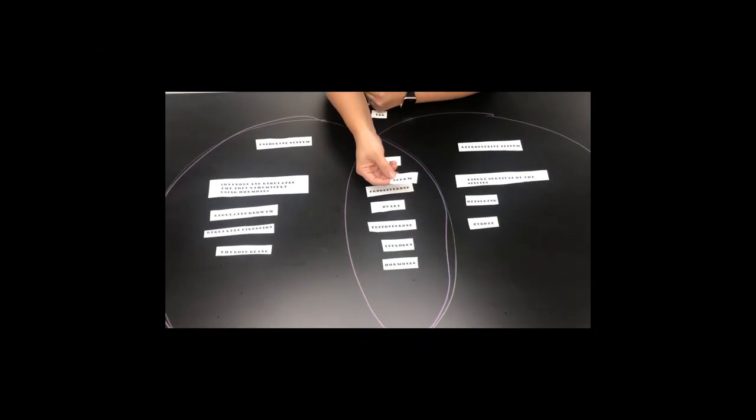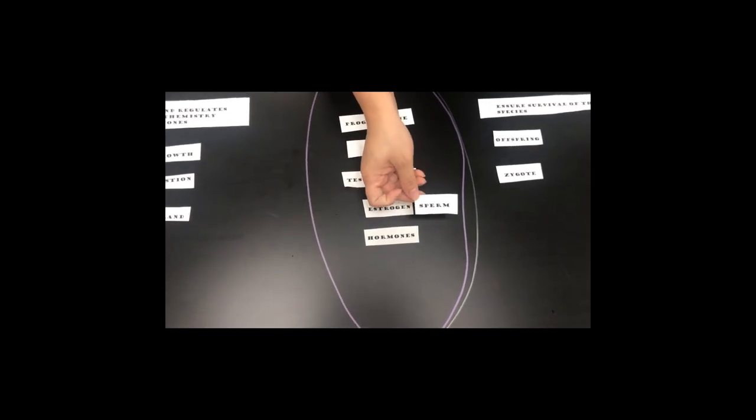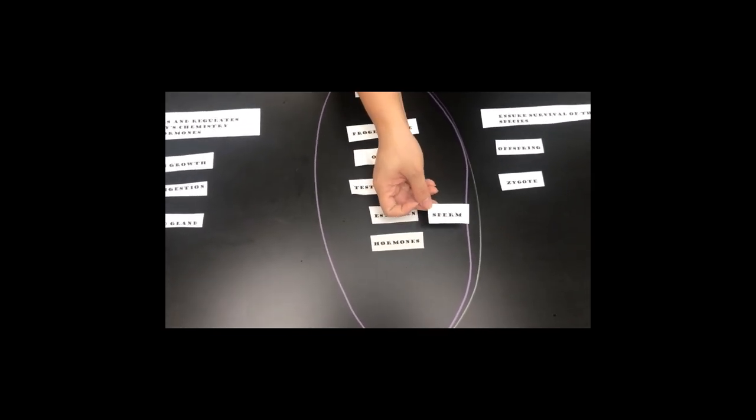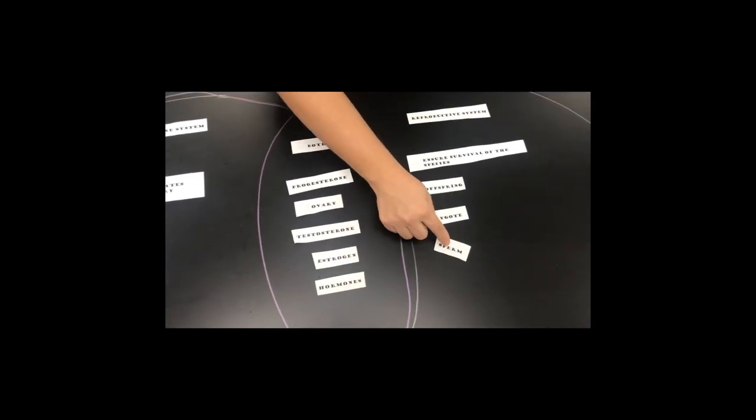The next one is sperm. Remember, sperm is produced by the testes. They are the male gametes. So that goes under the reproductive system.